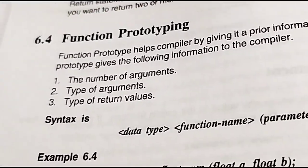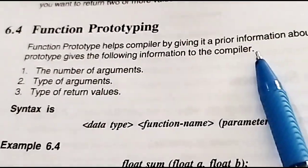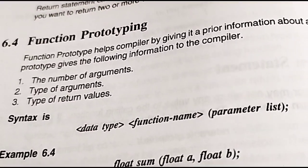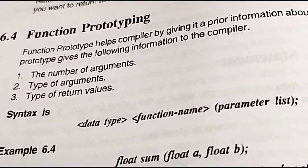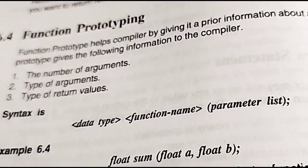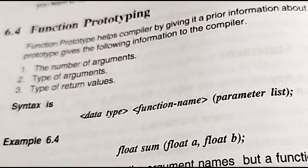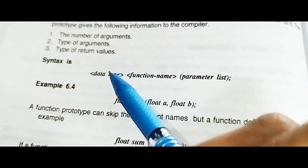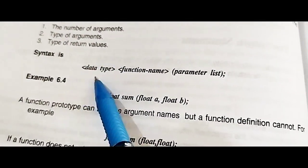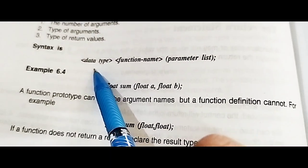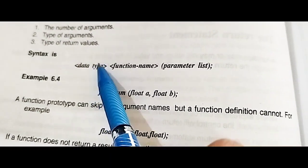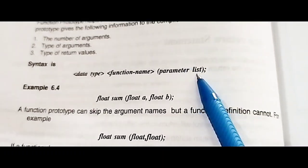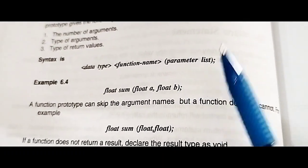Now coming to function prototyping. This informs our compiler about the number of arguments in our function and the return type. If we do not specify the return type of the function, by default it is taken as int, and if the argument type is not specified, it will also be int by default.